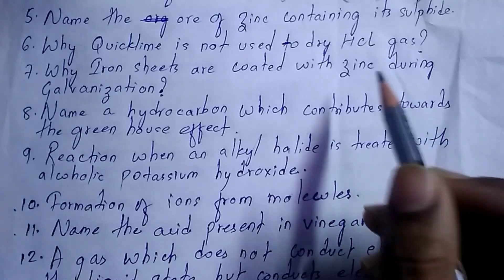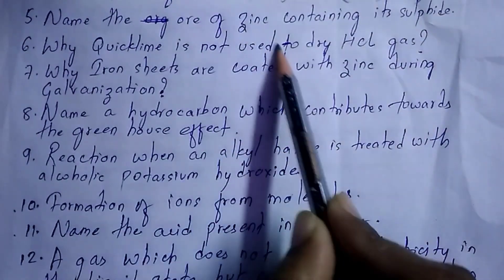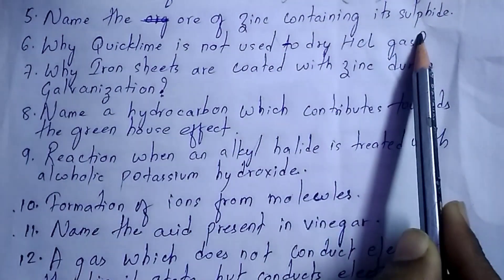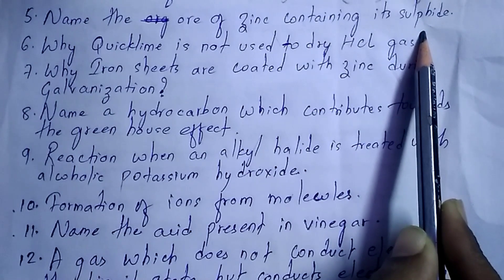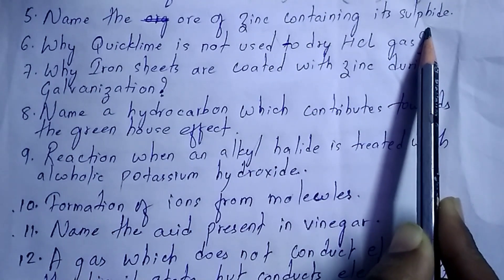Next question: name the ore of zinc containing its sulfide — it is zinc sulfide, also called zinc blende.